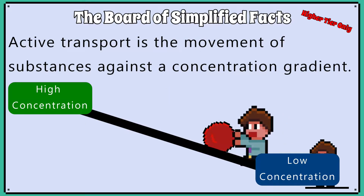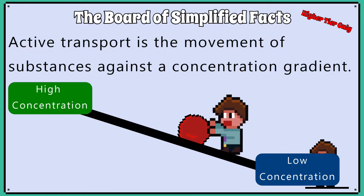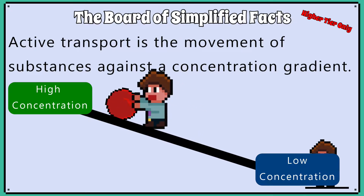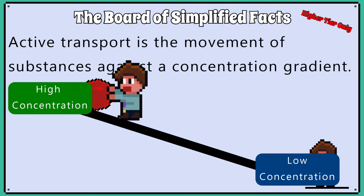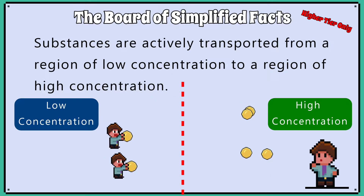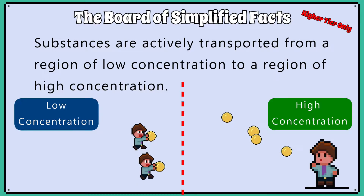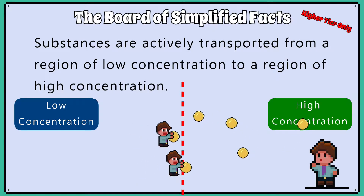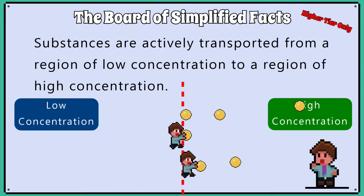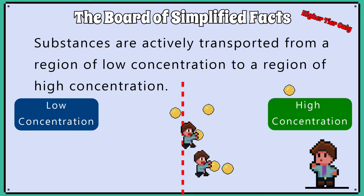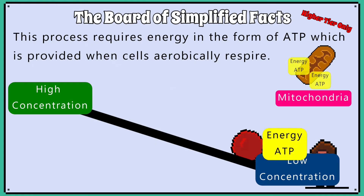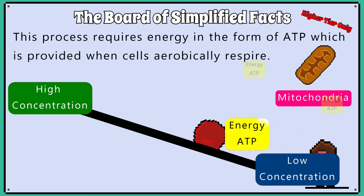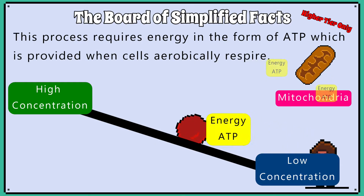Active transport is a movement of substances against a concentration gradient. Substances are actively transported from a region of low concentration to a region of high concentration. This process requires energy in the form of ATP,